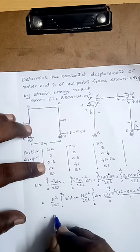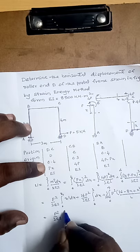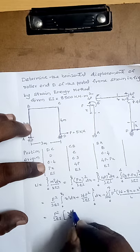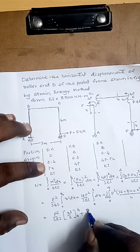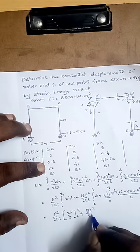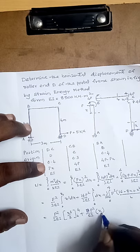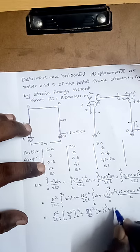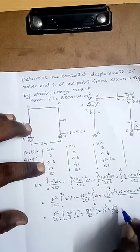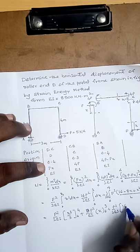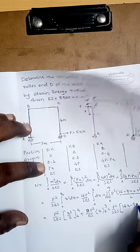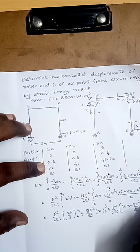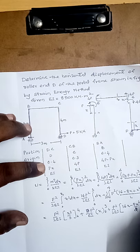Integrating: P²/2EI × [x³/3] from 0 to 4, plus 16P²/2EI = 8P²/EI × [x] from 0 to 3, plus P²/2EI × [16x − 8x²/2 + x³/3] from 0 to 4. Substituting limits: 16×4 = 64, minus 4×16 = 64, plus 64/3.